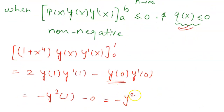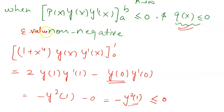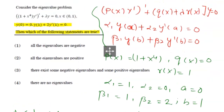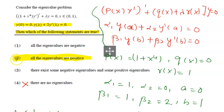This simplifies to minus y squared at 1. Now y squared at 1 is always greater than or equal to zero, and the minus sign makes it always less than or equal to zero. So here we can say all the eigenvalues are non-negative. Since all eigenvalues are non-negative and actually positive, this gives us the correct answer option. I hope you understand the explanation — thanks for watching.